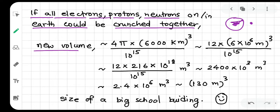This new volume, I will take approximately 4 pi times Earth's radius is about 6000 km, its cube upon 10 to the power 15. I will take approximately 3 pi, 12 into 6 into 10 to the power 6 meters cube. This is 12 as it is, 6 cube is 216, and 10 to the power 6 cube is 10 to the power 18, upon 10 to the power 15 is 10 to the power 3, and 216 into 12 is nearly 2400.